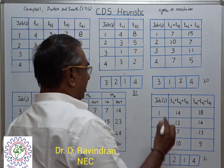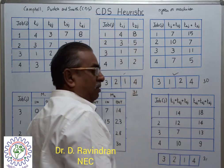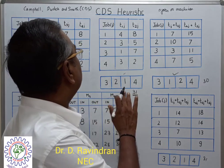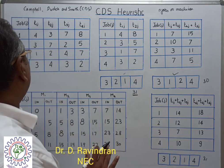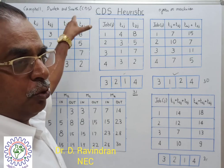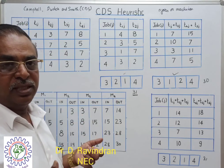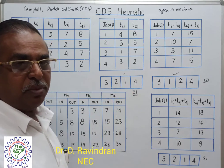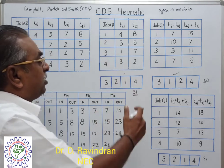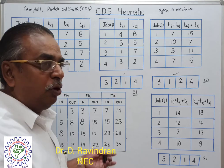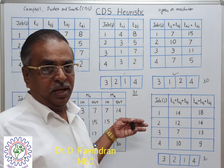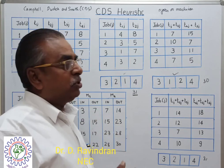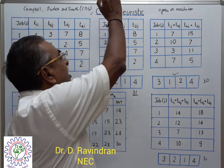This is how the CDS heuristic works for N jobs and M machines — here 4 jobs and 4 machines. Any number of jobs and any number of machines can be considered, and this heuristic can be effectively applied to find the best sequence that minimizes the makespan. When the number of jobs and machines increases, the solution space increases exponentially, making it very difficult to evaluate all possible sequences. In that case, the CDS heuristic is very useful in predicting the best sequence.